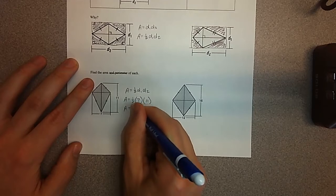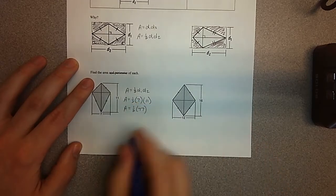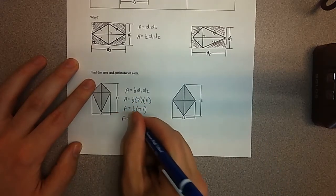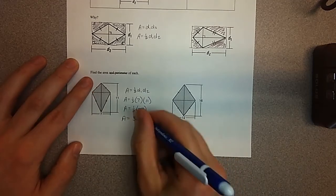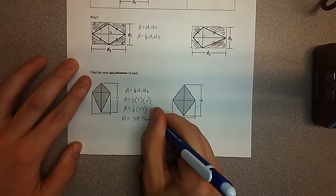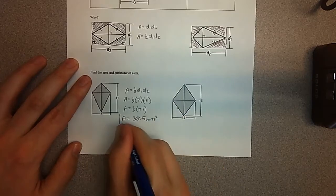Seven times 11 is 77, and half of 77 is, and you can, again, fact check me on this. Always check my answers, too, as you're going through this. If you find something, let me know. I got 38.5 units squared. It is still area.